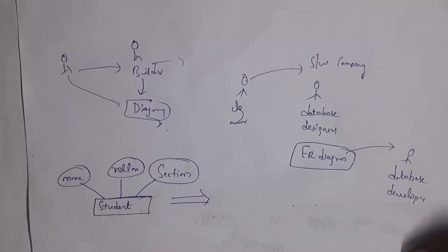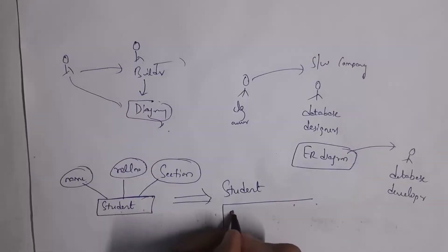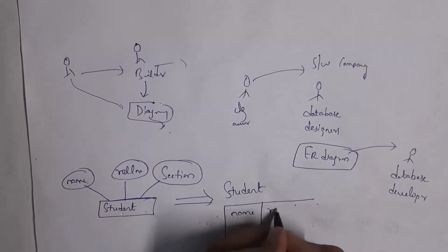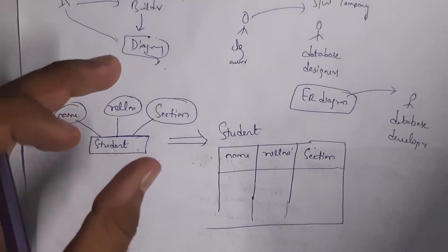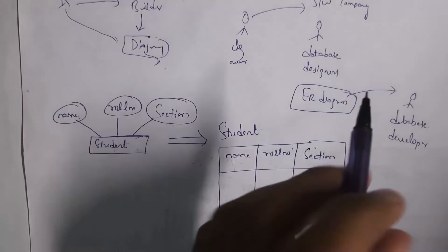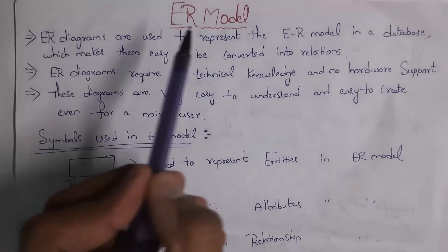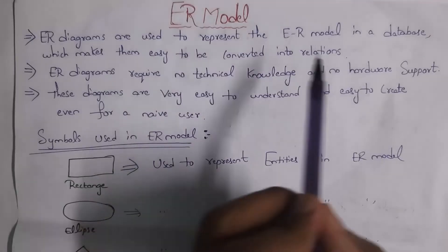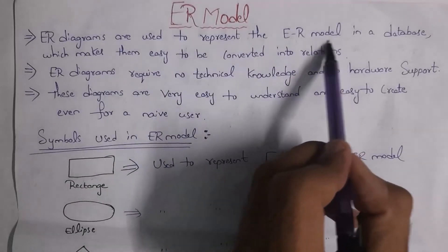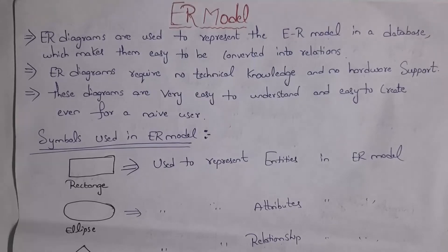The database developer will create a student table. Attributes are nothing but columns. So there are three columns: name, roll number and section. By seeing this diagram, the database developer will create the actual table in database software. This is a simple definition of ER model. ER diagrams are used to represent the ER model in a database, which makes them easy to be converted into relations. We also call tables as relations.